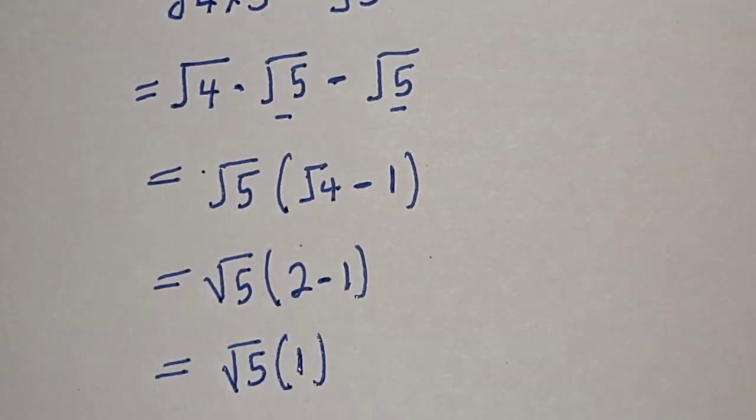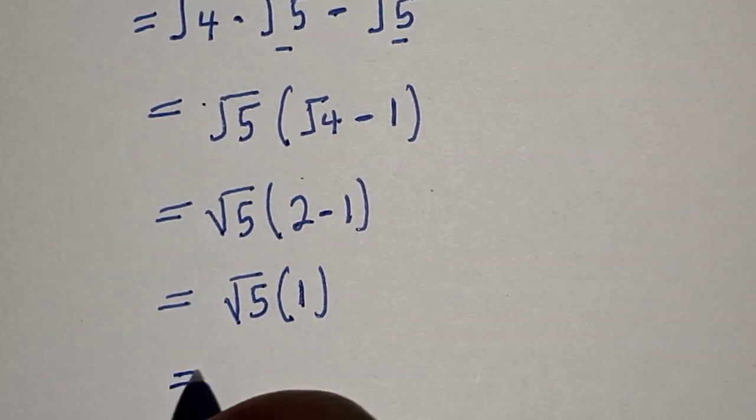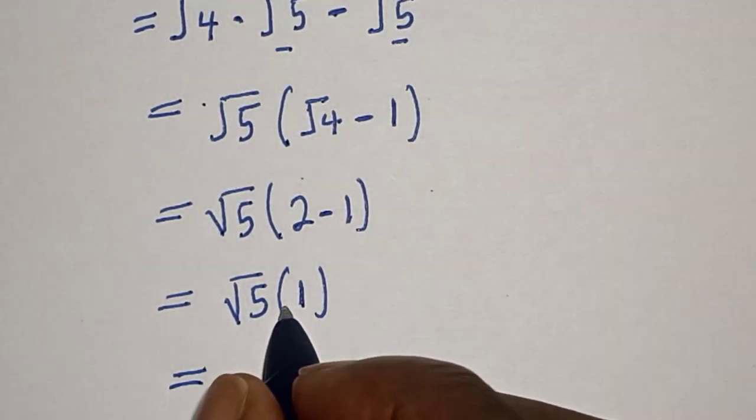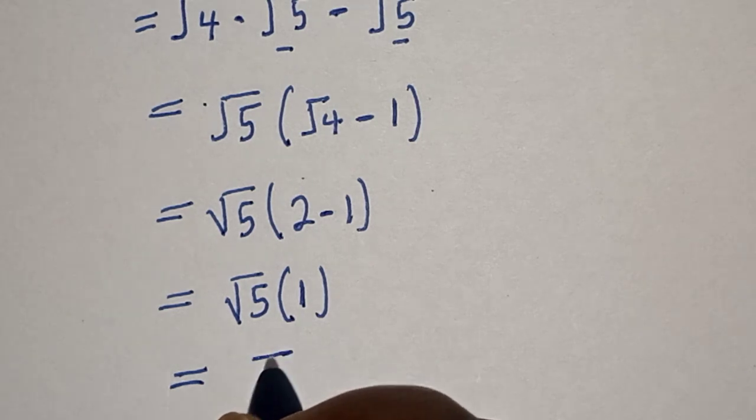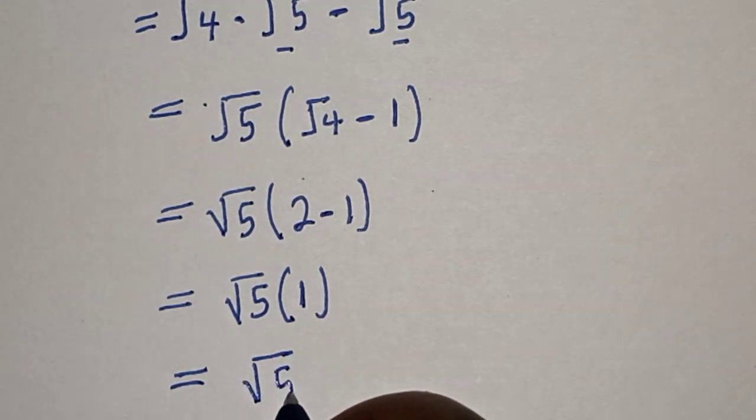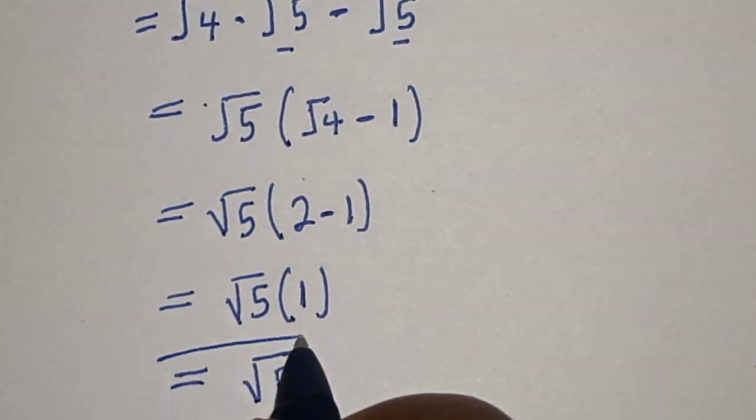That is 1. And, if you multiply this, square root of 5 multiplied by 1, this is square root of 5. And, this is our final answer.